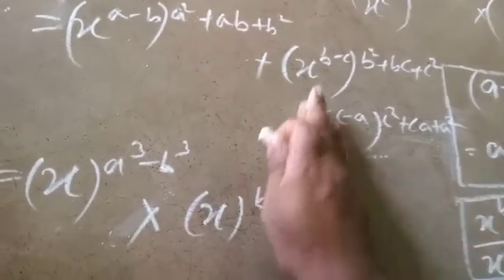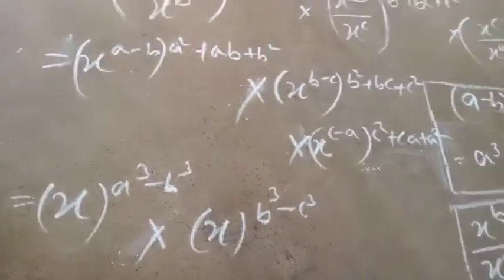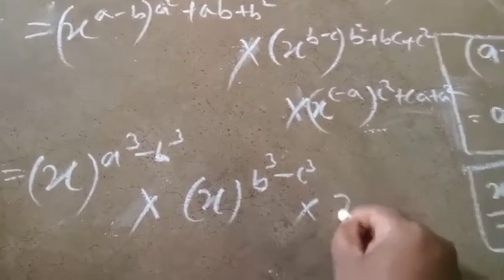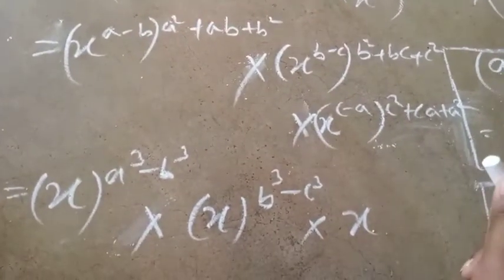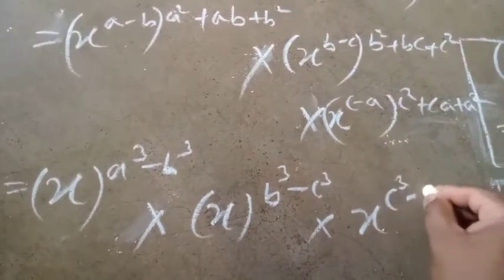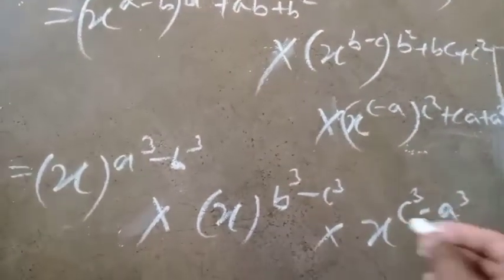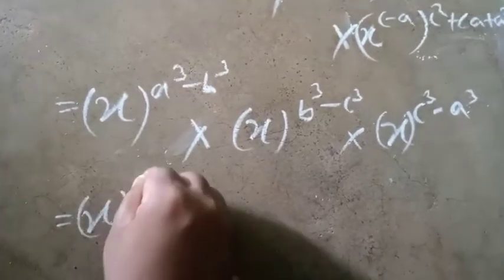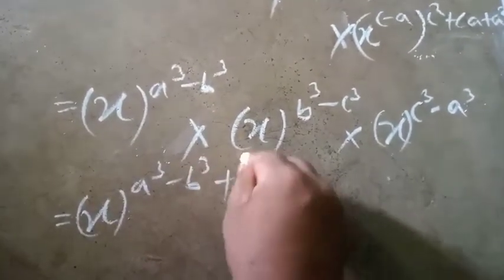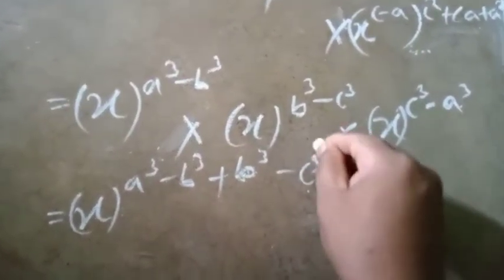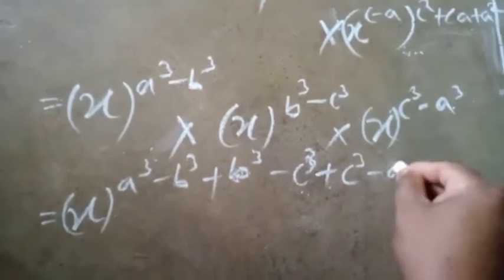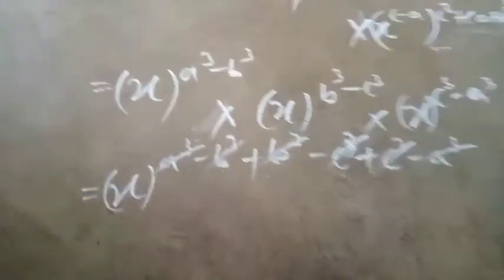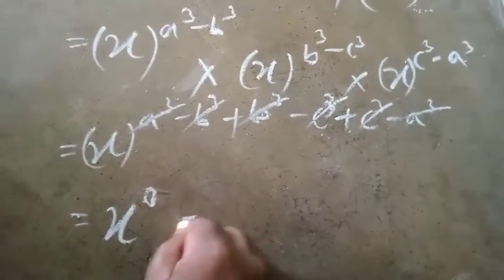Then, the plan is what we call x to the power b minus c, whole to the power c minus a, whole to the power c squared plus ca plus a squared. Again, the plan gives us x to the power c cubed minus a cubed plus c cubed minus a cubed. So, x to the power 0 is equal to 1.